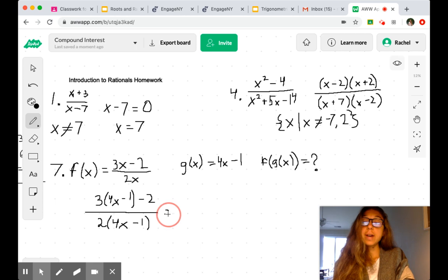Okay. And now I distribute my 3. And in the denominator, I'm distributing a 2. And maybe you did this as one step, but we want to combine like terms if you haven't already done so.